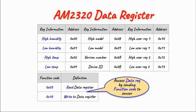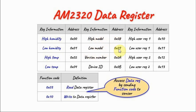To get temperature and humidity from the sensor, we need to access the AM2320 data register. Within its memory, the high humidity is stored at location 0, low humidity at location 1, the high byte of temperature at location 2, and the low byte at location 3. The data register also stores information such as the model of the AM2320 — the high and low bytes of the model — plus the version number, device ID, and reserved locations for user-stored information.